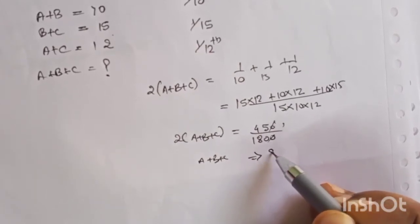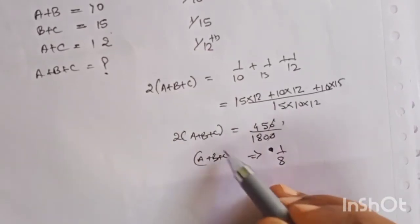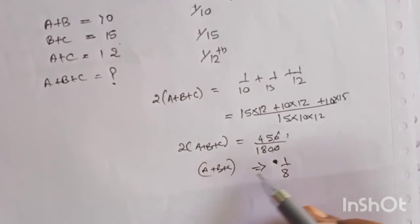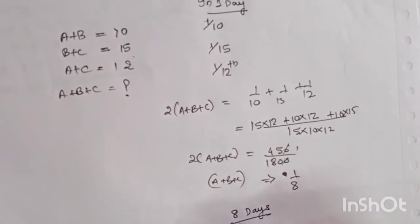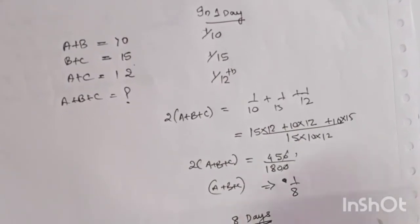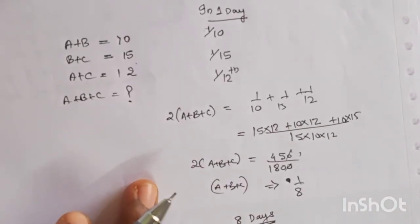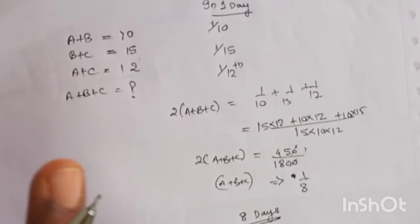Okay, so A plus B plus C comes out to be one by eight. So work done by A plus B plus C in one day is one by eight, so they will take eight days to solve it. Now this is one method to solve it by using the concept of work done in one day.